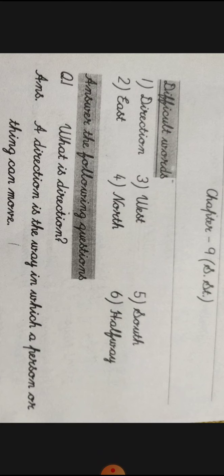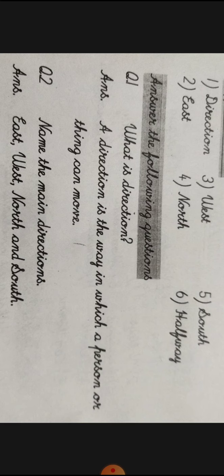Next, answer the following questions. Question number 1: What is Direction? Direction क्या चीज़ होती है? Answer: A direction is the way in which a person or thing can move. Direction वह होता है जहां पर वह रास्ता होता है जहां पर कोई भी व्यक्ति और कोई भी वस्तु मूव करती है। जब वो मूव करेगा तो वो कोई न कोई दिशा होगी ही — इसी को direction कहते हैं।